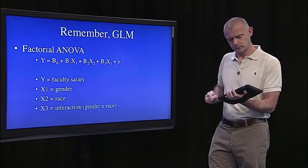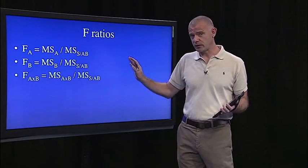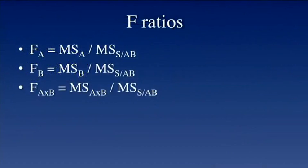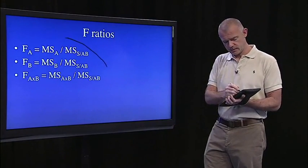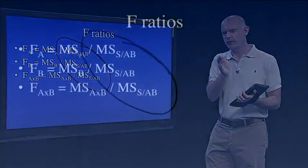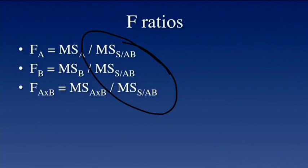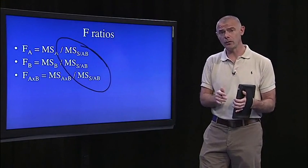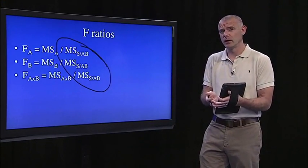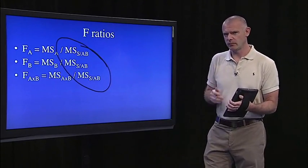We'll get three F-ratios: F sub A, F sub B, and F sub A-by-B. They're all a ratio of mean squares - systematic variance relative to unsystematic variance - so mean squares sub A over mean squares S-within-AB. Notice that the error terms for every F-ratio are exactly the same. We get to do that with a between-groups design because we make the homogeneity of variance assumption. If that holds, we get to use the same error term for every F-ratio. If it doesn't hold, we'll have to calculate a restricted error term, which we'll do in lecture 15.